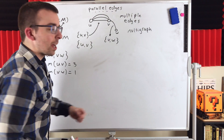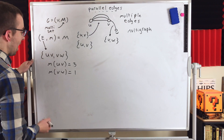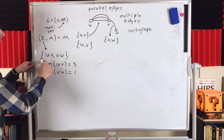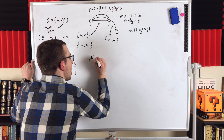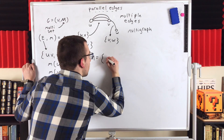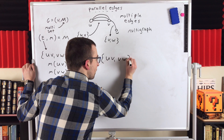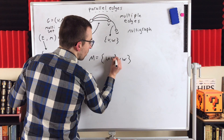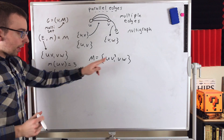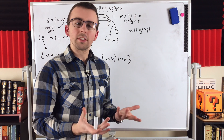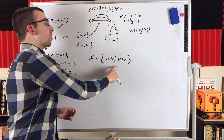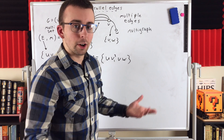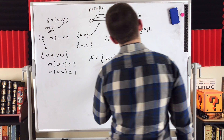A quicker way we can write multi-sets is instead of having to talk about the function m explicitly, we write the multiplicity as a superscript when we list the elements of the set. So our multi-set M contains the distinct edges uv and vw, with uv having a superscript of three — there are three edges joining u and v — and vw having a superscript of one, which we don't write, just like with exponents. This notation is totally fine here, even if it could cause confusion in other contexts.